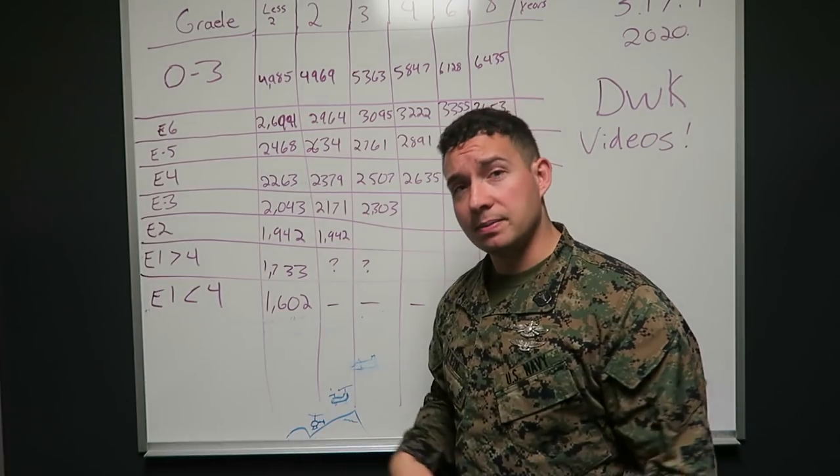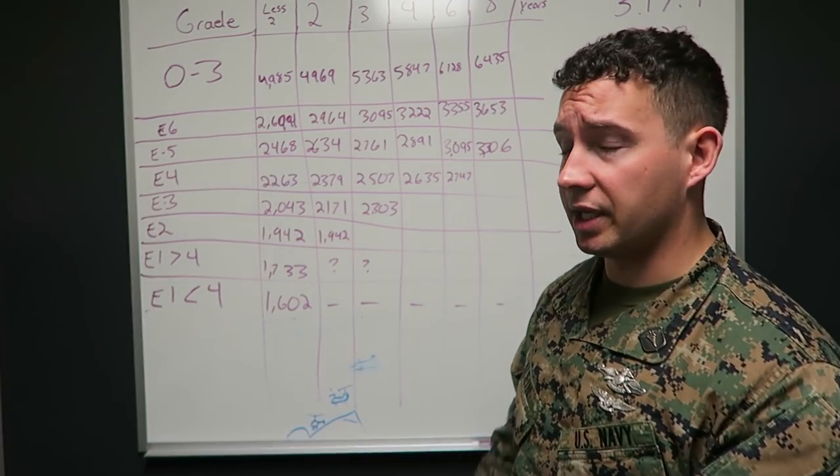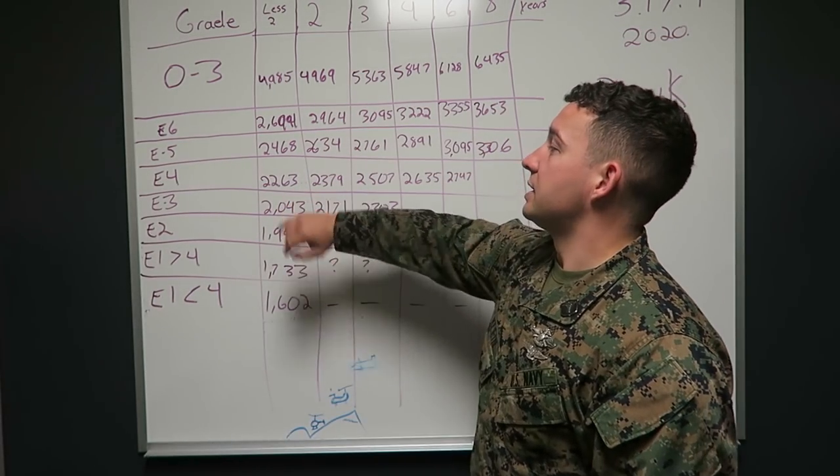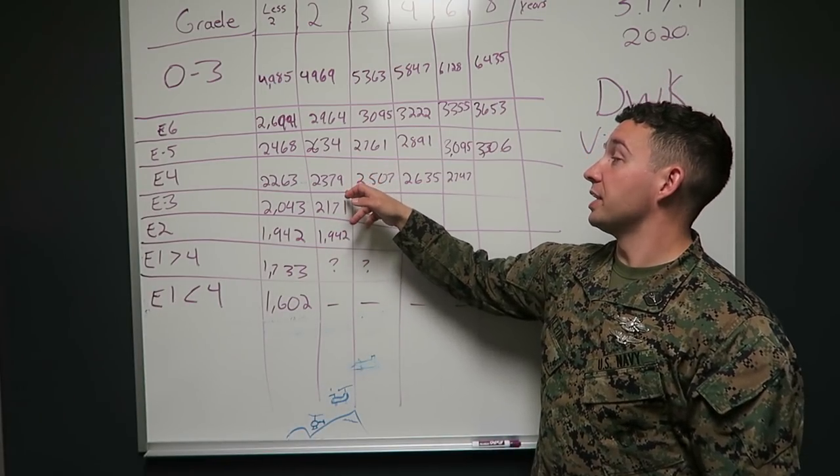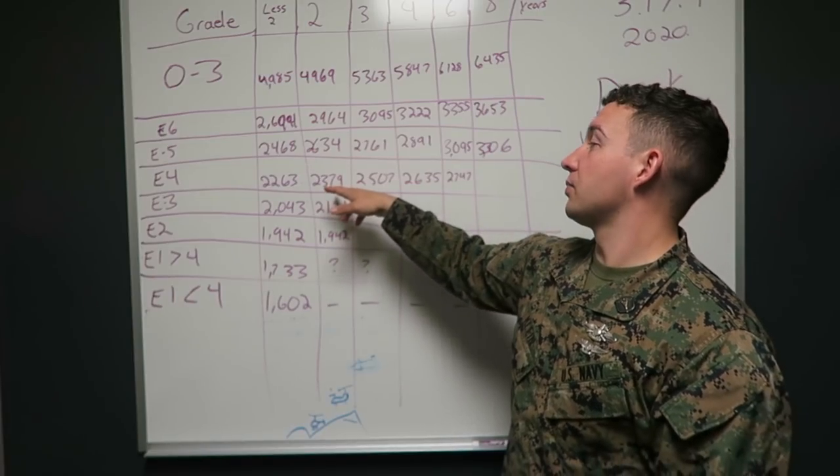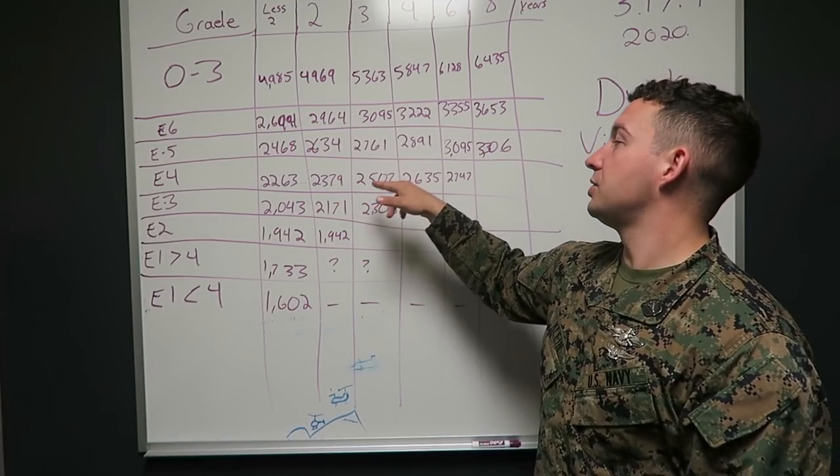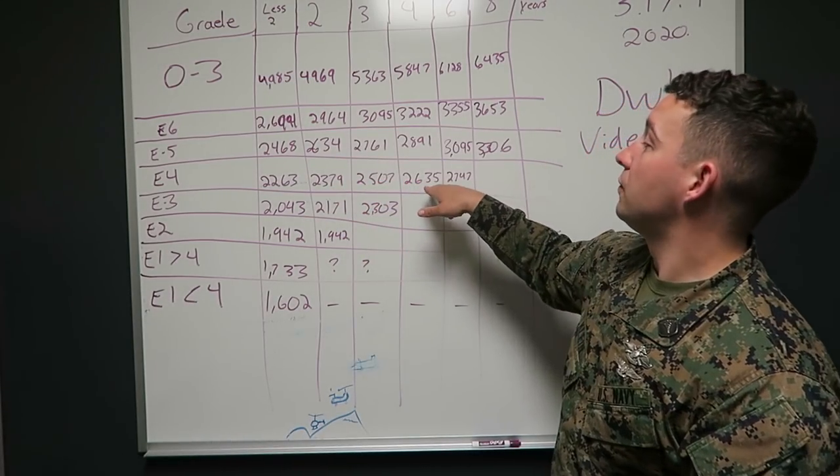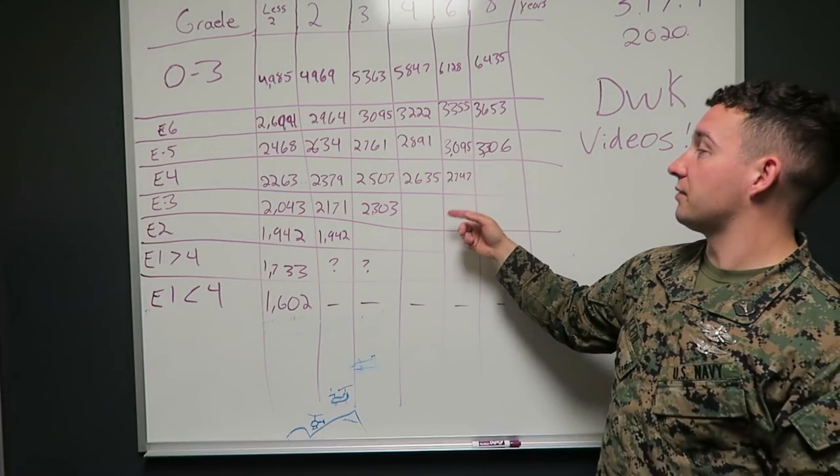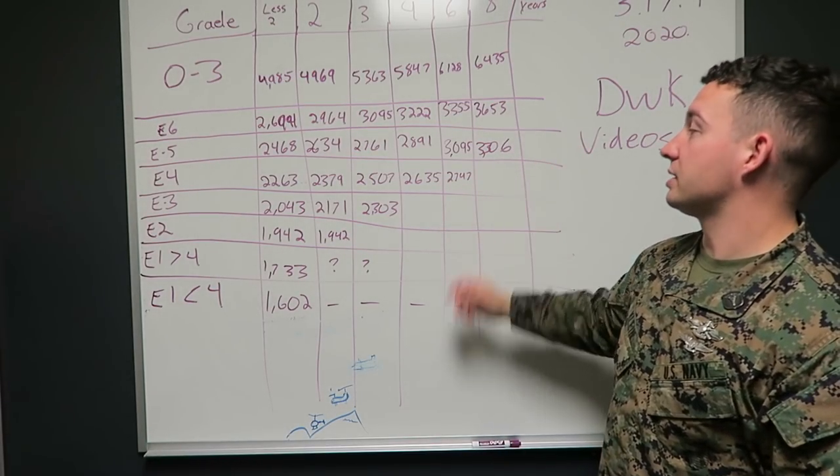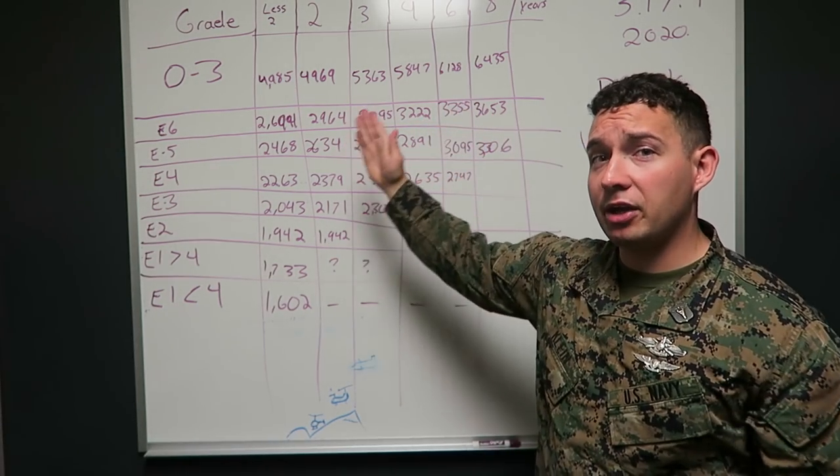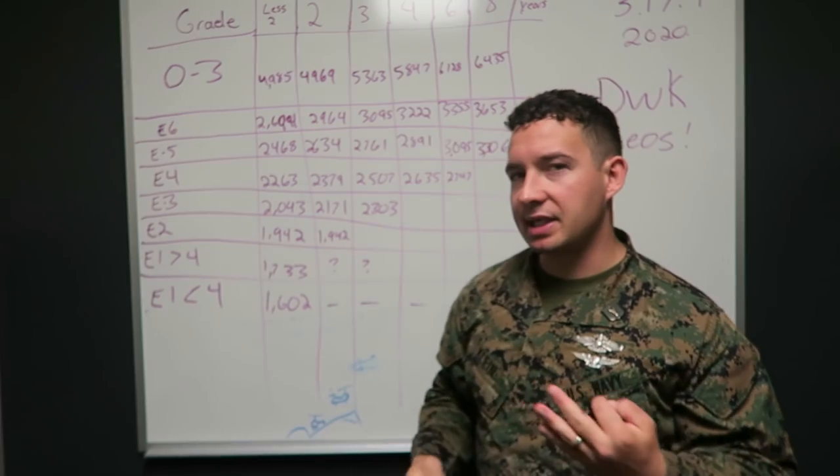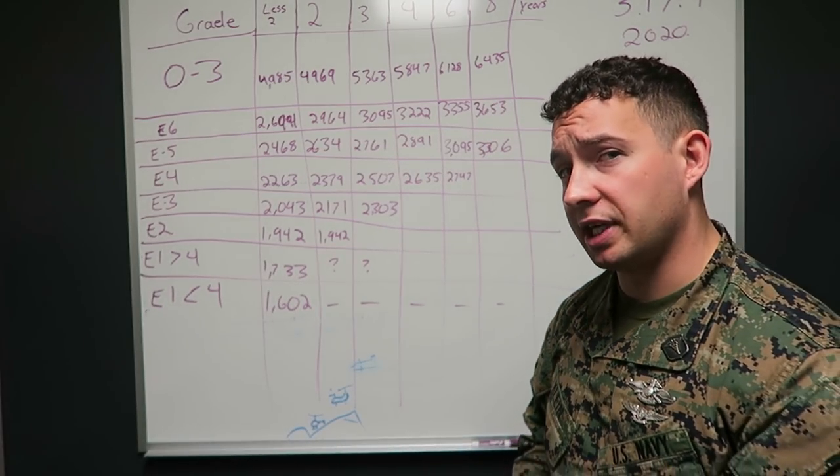But let's say you get up to E4, which in a lot of communities, you can actually get E4 out of your A school. Less than two years, $2,263. E4 with two years or more, $2,379. Three years, $2,507. Four years, $2,635. And six years, $2,747. So not only does your pay go up with rank, but your pay goes up with time and service.